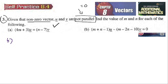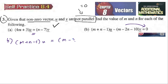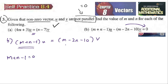For part b, again we cannot compare it because it is not parallel. What we need to do is bring terms to one side, so we have m plus n minus one, all times u, is equal to m minus two n minus ten, all times v. Since it is not parallel we cannot compare directly, so we take m plus n minus one equal to zero.